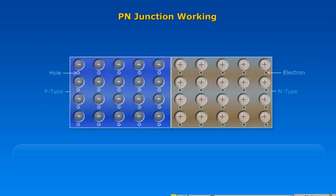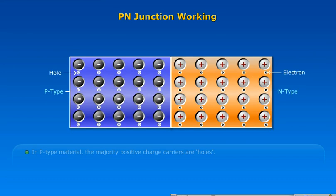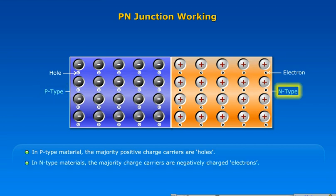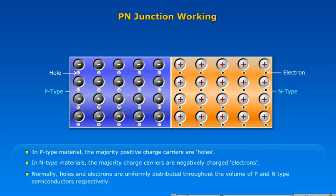P-N junction working. In P-type material, the majority positive charge carriers are holes. In N-type material, the majority charge carriers are negatively charged electrons. Normally, holes and electrons are uniformly distributed throughout the volume of P and N-type semiconductors respectively.